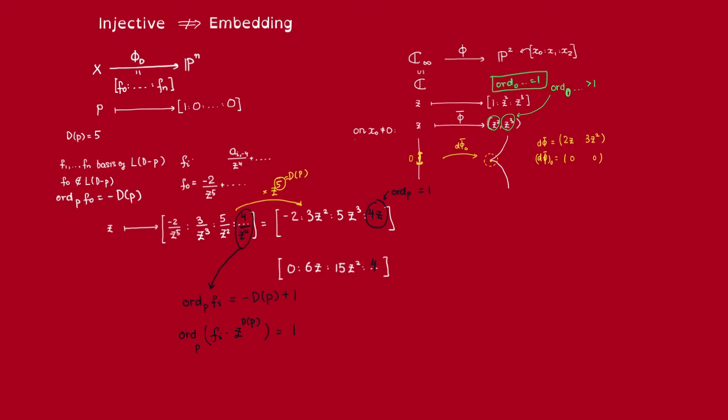Alright, so how do we rephrase this in terms of Riemann-Roch spaces? What does it mean for F_i to have order of vanishing at P exactly equal to this? Well, that would just mean that F_i lies exactly in L(D - P) but not in L(D - 2P). In our specific case when D_P is 5, for F_i to lie inside L(D - 2P), that means it has a pole of order less than or equal to 4.